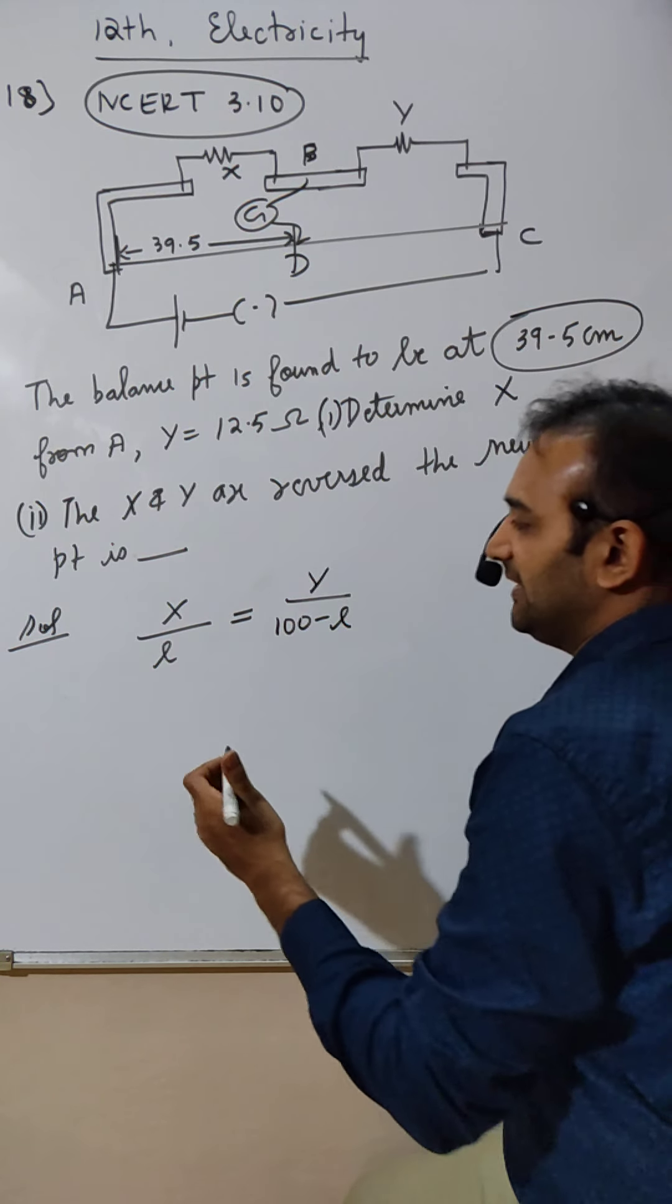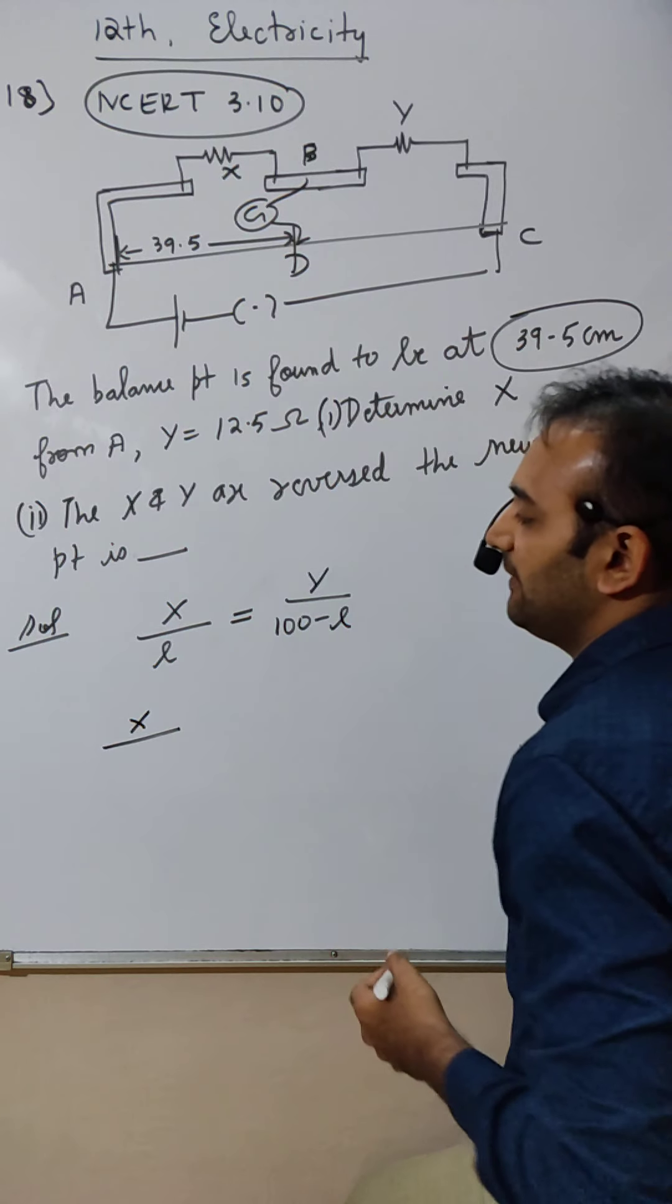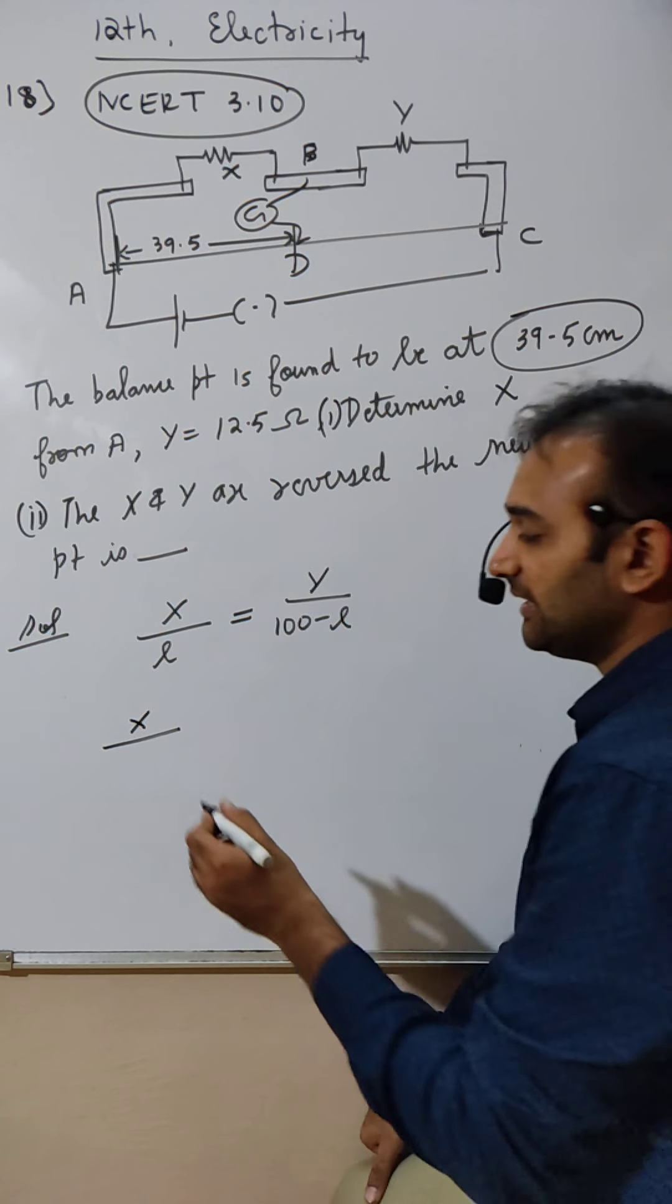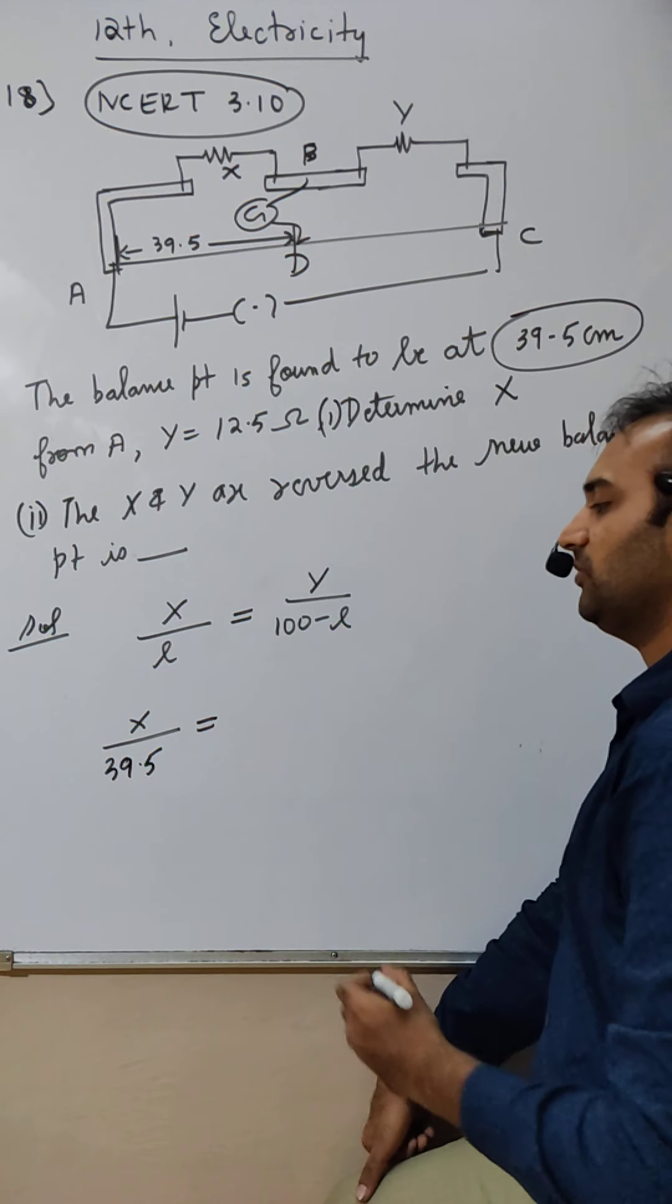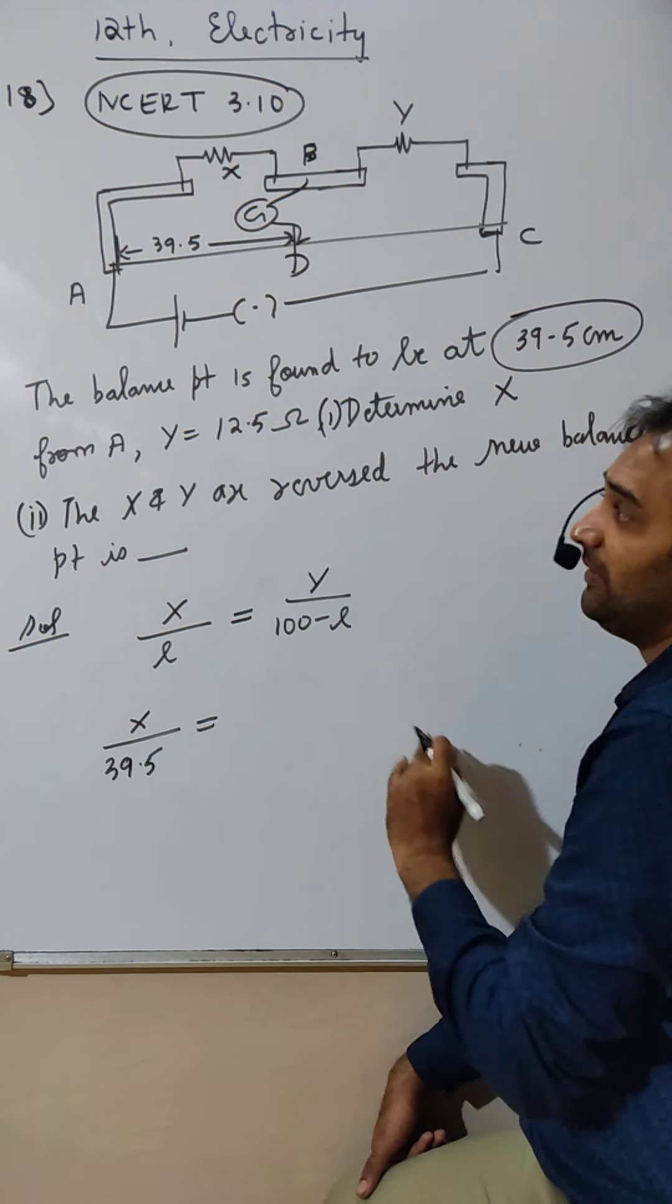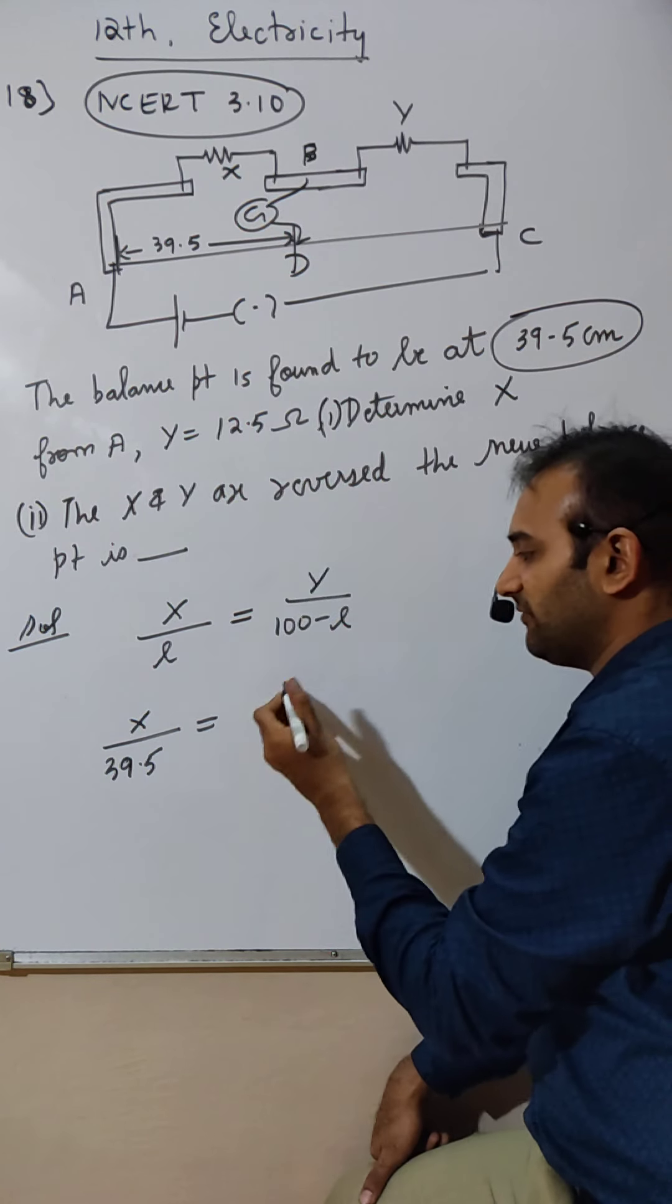X is unknown. L is 39.5. Next, Y - we know this - is 12.5.